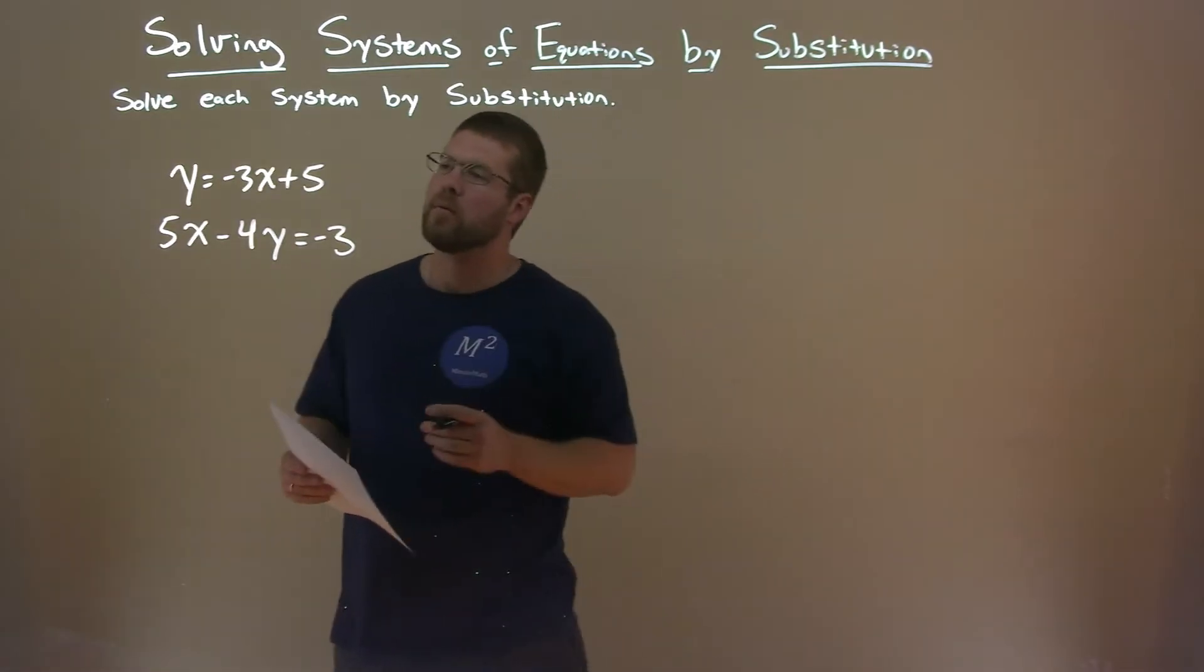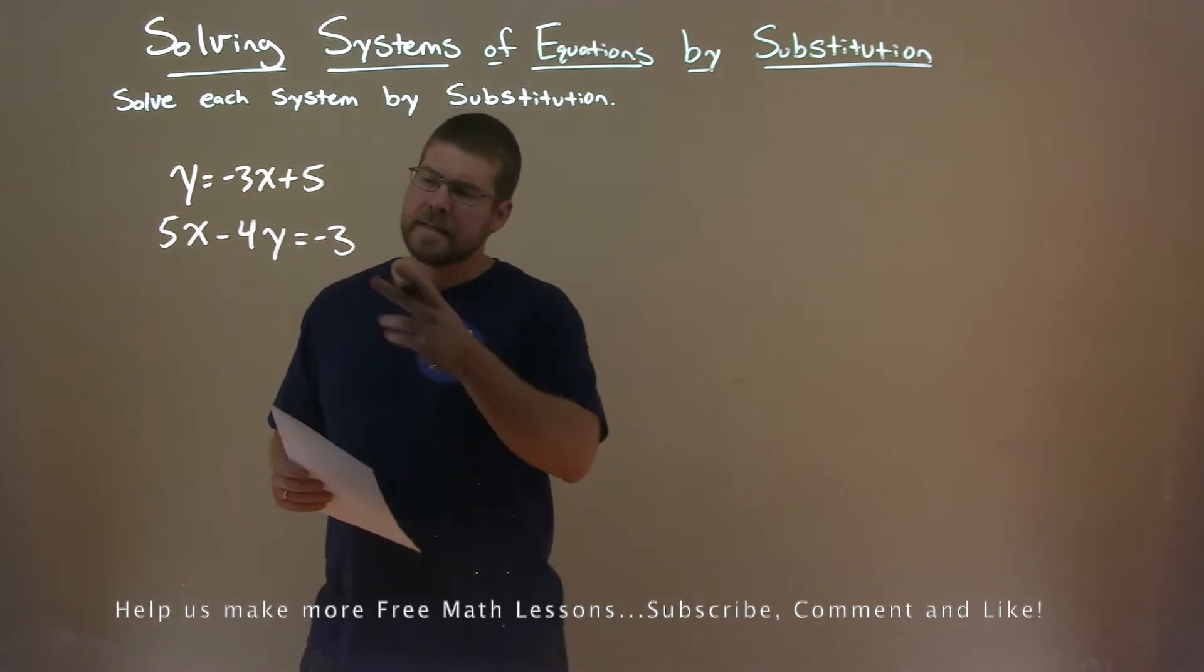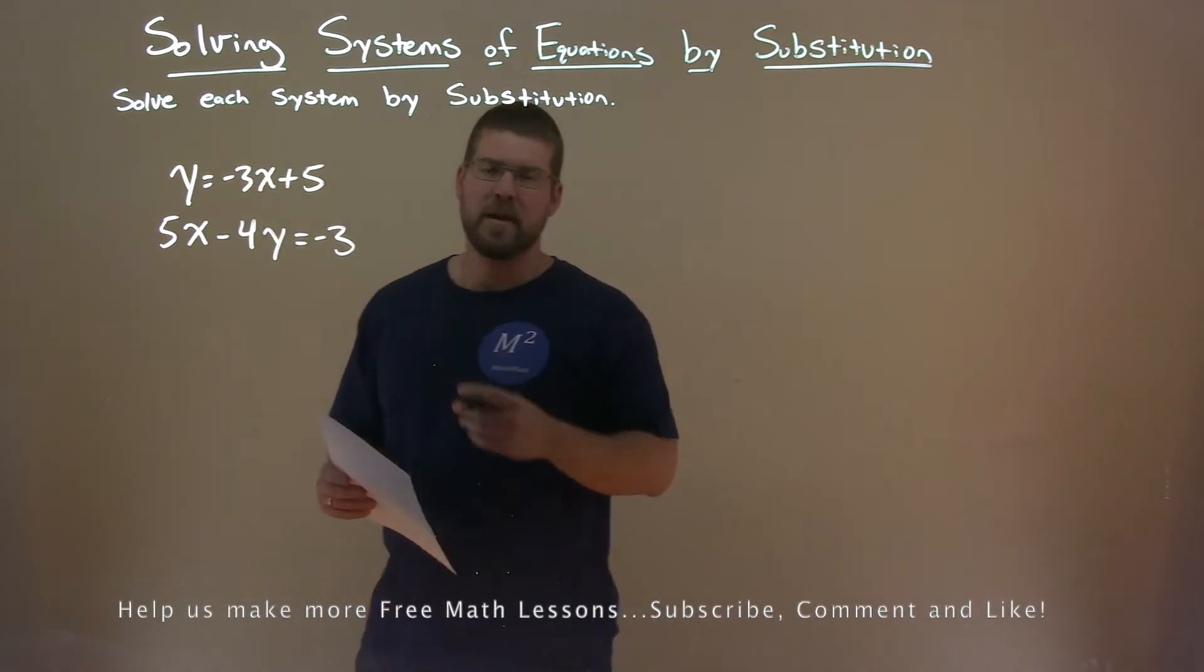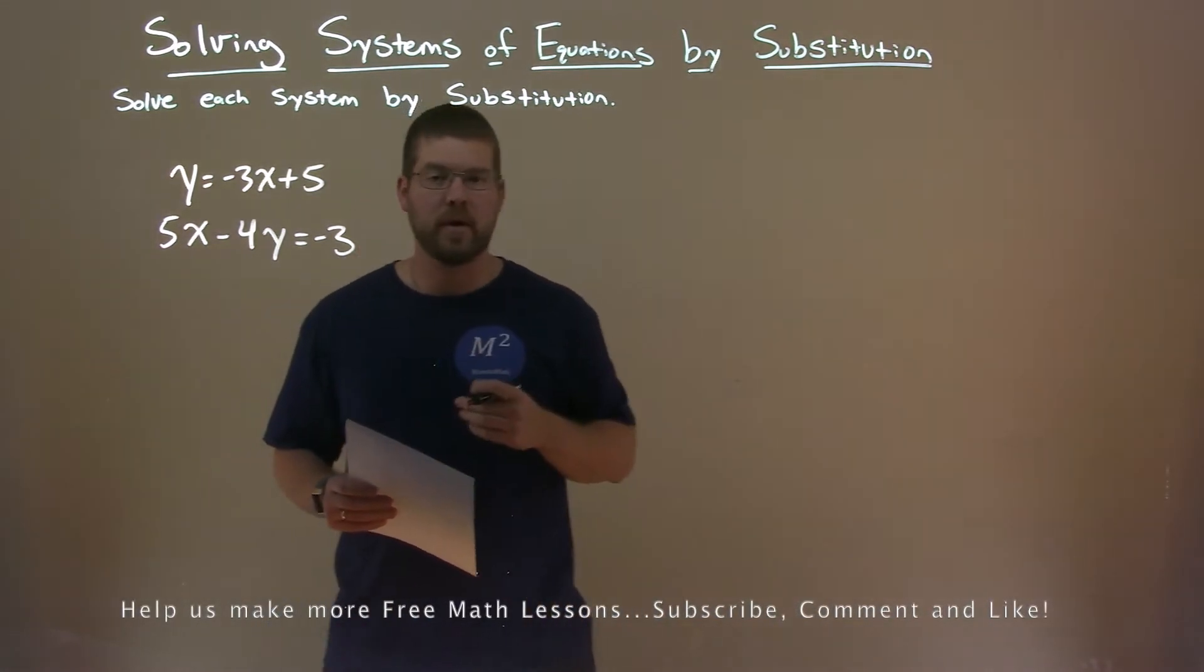We're given this problem here: y equals minus 3x plus 5, and 5x minus 4y equals negative 3. And we have to solve this by substitution.